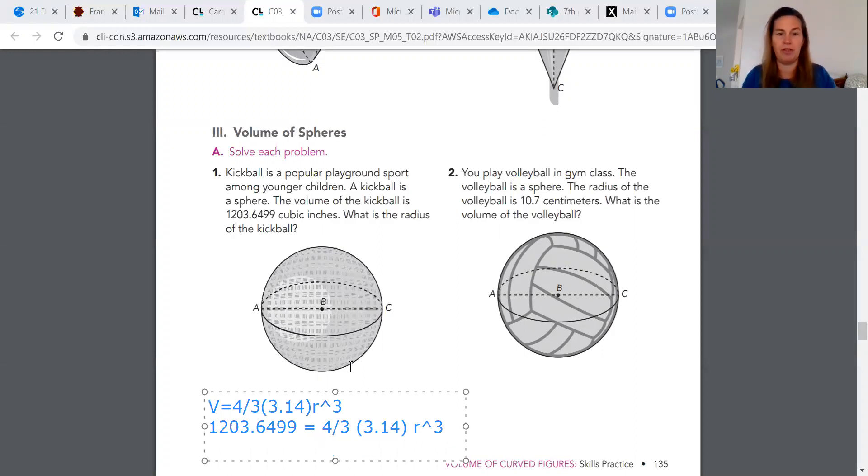So I'm going to do 3.14 times 4/3, again doing 3.14 times parentheses 4 divided by 3. When I do that, I'm getting a number that's fairly long and repeating. So I'm going to round this to 4.19 times r to the third. Now I'm going to divide both sides by 4.19 so I have r cubed by itself. So 1,203 divided by 4.19 equals about 287.27, so 287.27 equals r to the third.